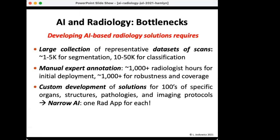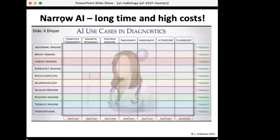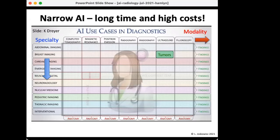You're going to custom-develop solutions for hundreds of specific organs, structures, and pathologies — essentially creating narrow AI, one app for each. This is a lengthy and costly development. Think of a large matrix of different disciplines and imaging modalities — what you're really doing is filling in one small box at a time in this huge matrix, very laboriously. For example, if you did spine segmentation for CT, how does it work when you need to do it for MRI? Transfer learning is not clear.